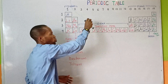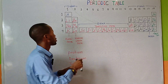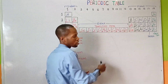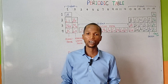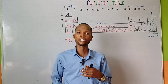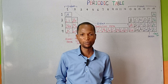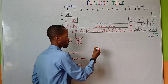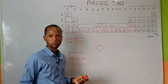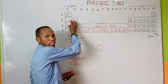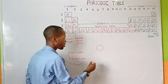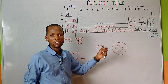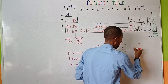Elements in period 1 contain just one shell. Elements in period 2 will contain 2 shells. While elements in period 3 contain 3 shells. For example, hydrogen and helium are found in the same period with just one shell because they are found in period 1. Elements in period 2, like lithium towards neon, contain 2 shells. Elements in period 3, from sodium to argon, contain 3 shells.